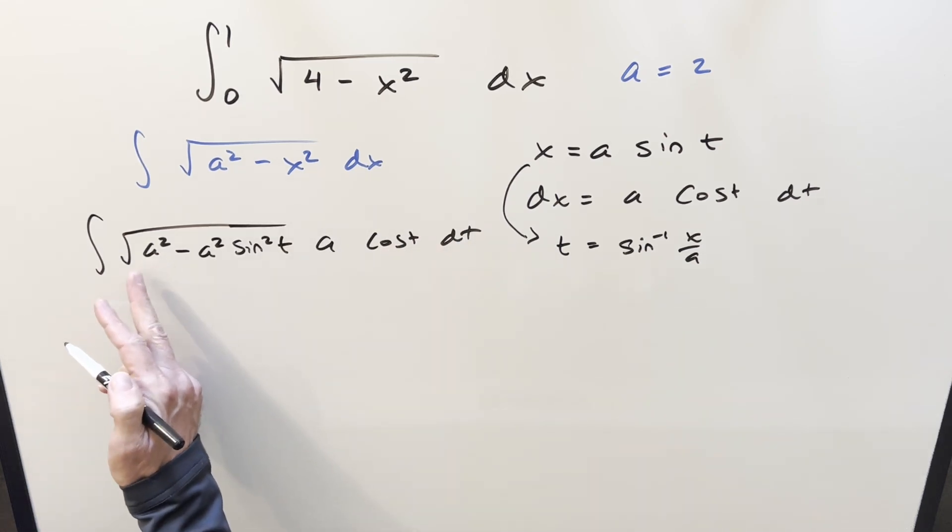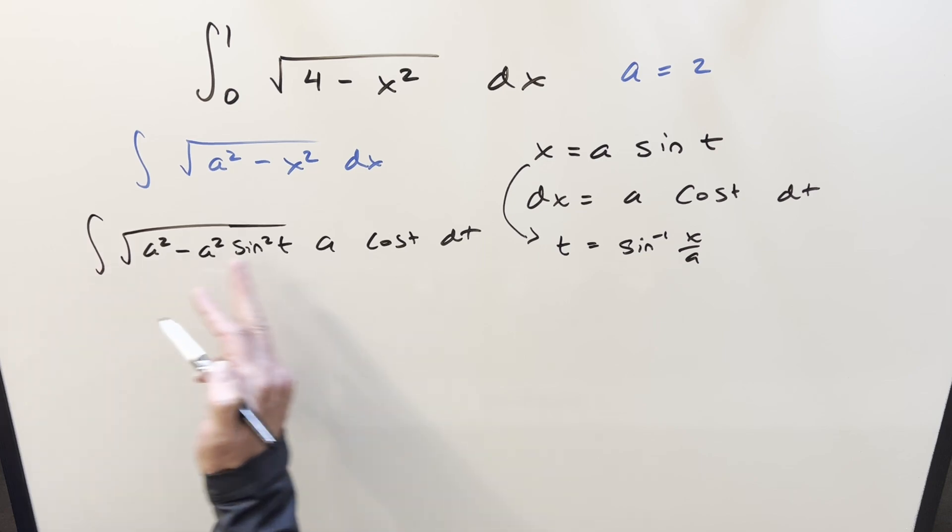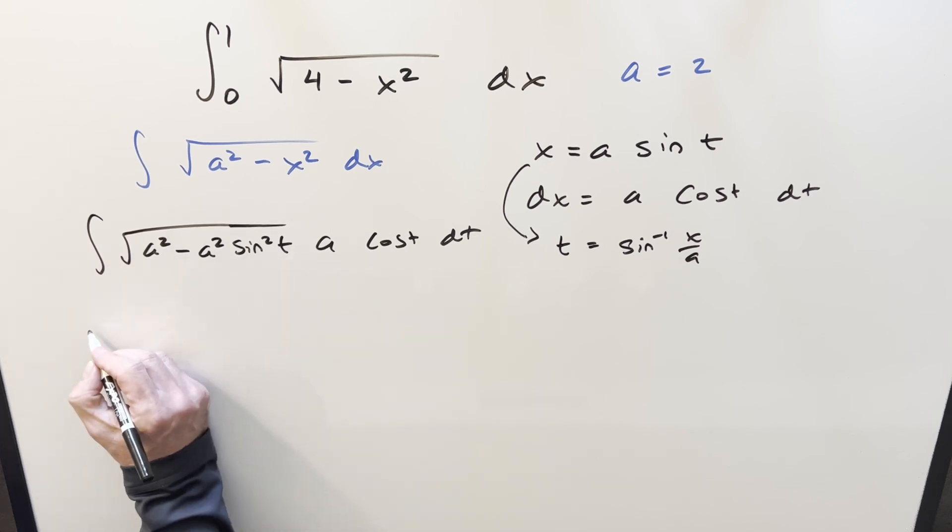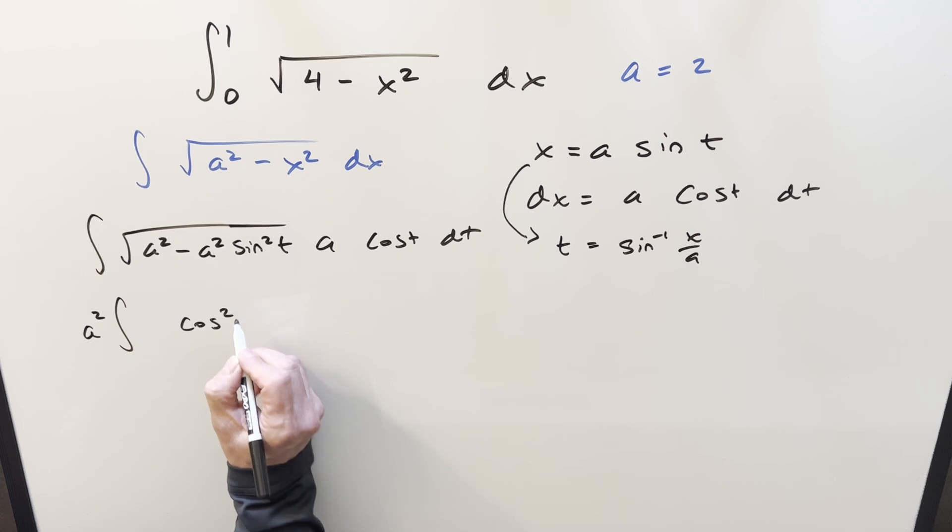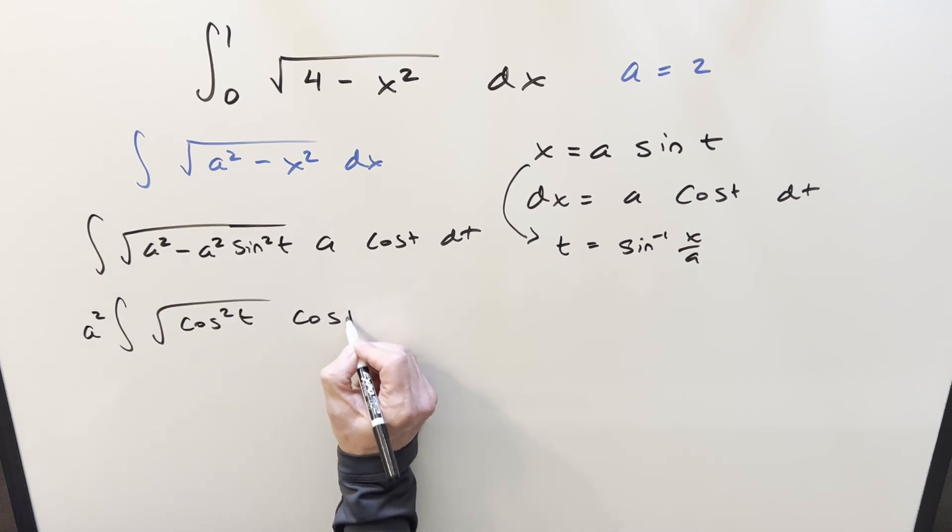Well, if I factor a squared and then bring it out of the square, that's going to be an a times this one. We'll have a constant a squared I can bring in front of everything. Then what's going to be left here is going to be one minus sine squared t, which we can write as cosine squared t, just kind of making it clear inside the square root cosine t.